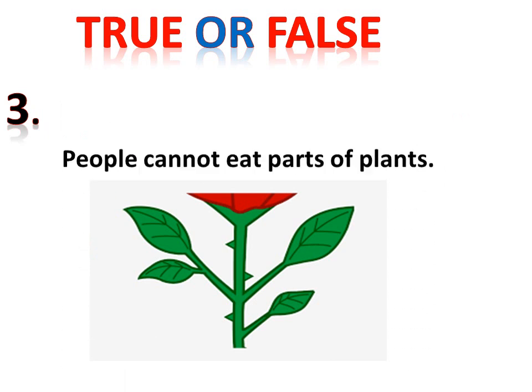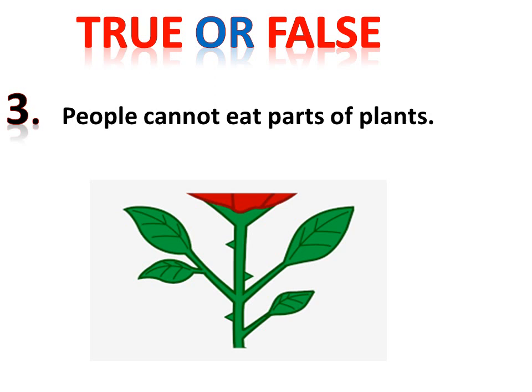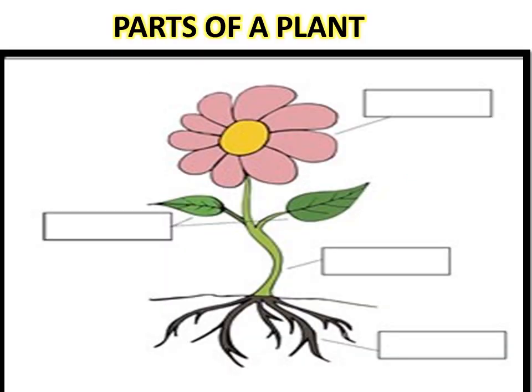Statement three: people cannot eat parts of a plant. You do eat parts of plants — leaves and stems. But the statement says people cannot eat parts of a plant, so this statement is true. Next is a worksheet on parts of a plant — go back and complete it.